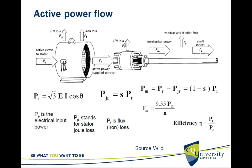The mechanical power Pm = Pr − PJR = (1 − s) × Pr, which is the rest of the active power supplied to the rotor after subtracting rotor losses.